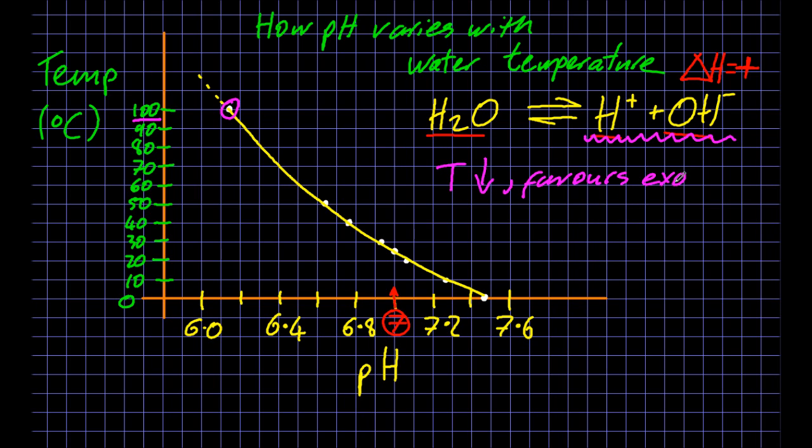If you cool it down, it favors the exothermic side, which is the reverse reaction, according to Le Châtelier. So the hydrogen ion concentration goes down, and the pH goes up. So that explains some of that graph.